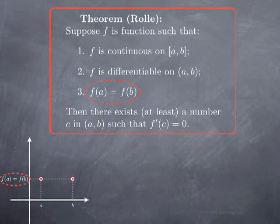The third condition — that the values at the endpoints are the same — corresponds to the two endpoints being at the same level. The conditions that the function is continuous on the closed interval and differentiable on the open interval mean that we connect these two points without lifting the pen and without having any corner point. The conclusion is that there is a place where the derivative is zero. Geometrically, that means there is a place in the open interval (a,b) where the tangent line is horizontal, as we can see on this particular picture.